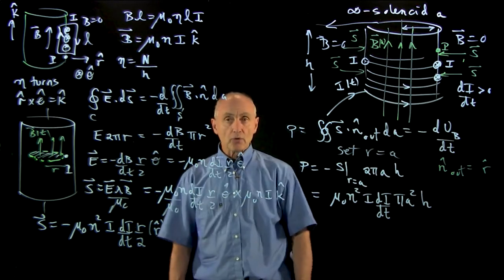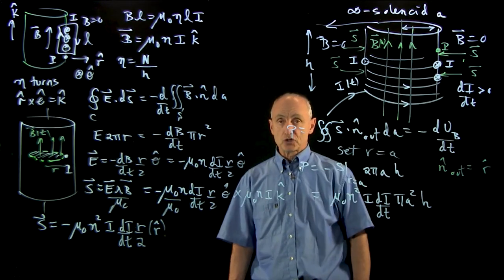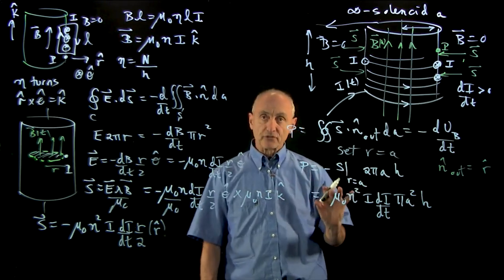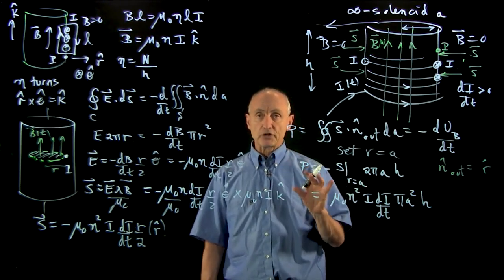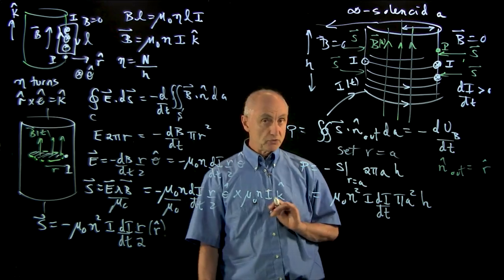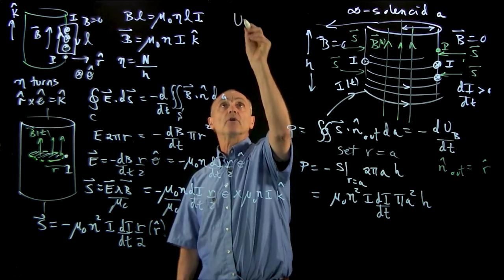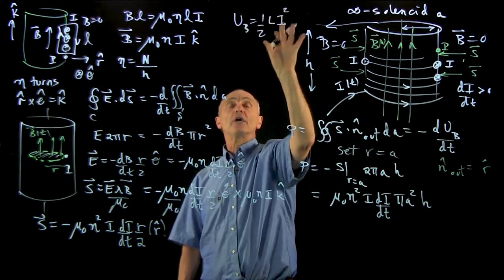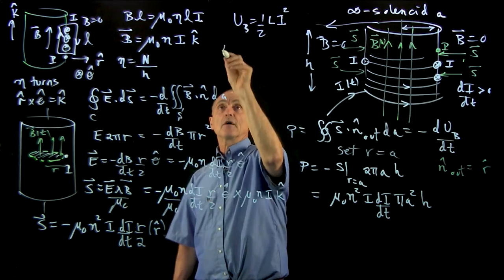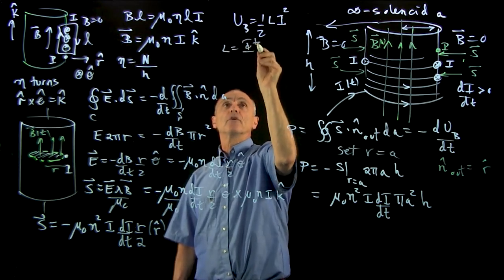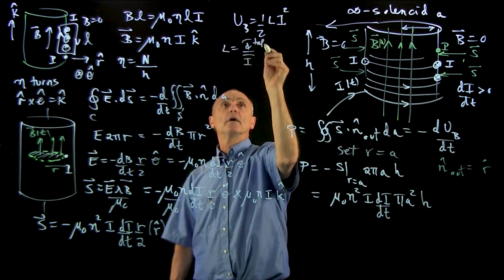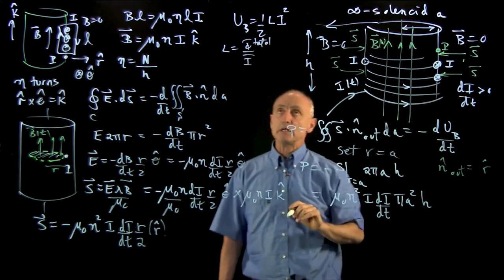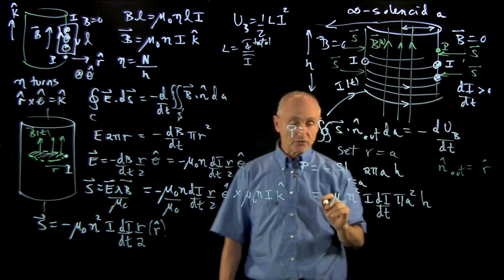Now, what we want to show is this is equal to the energy stored, the time rate of change of energy stored. When we looked at the capacitor, we looked at the electrical energy stored as q squared over 2C. We could do the same thing with the inductor, where magnetic energy stored is one-half L i squared. Calculate L by remembering that the total flux over the current is the self-inductance.